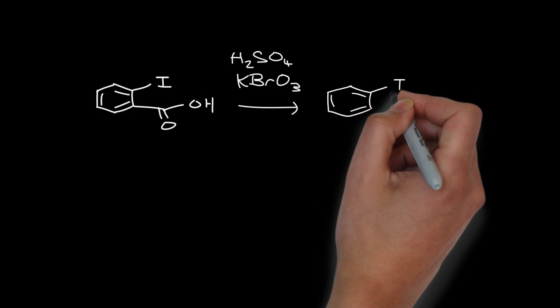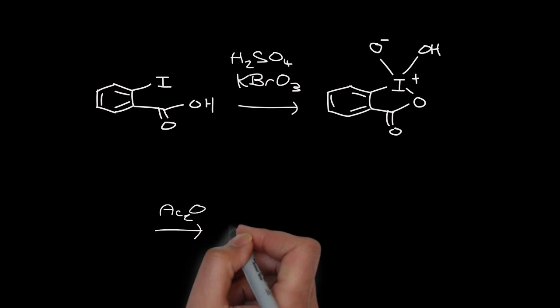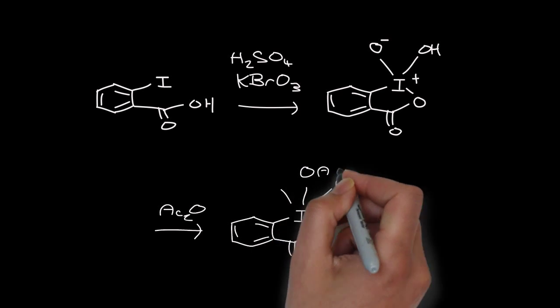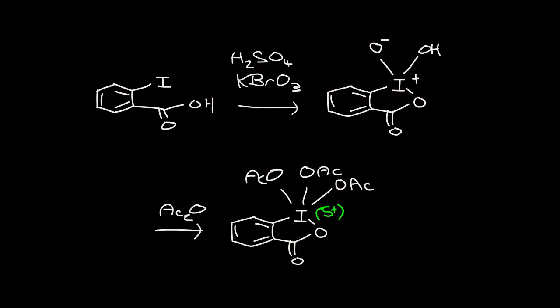Oxidation of 2-iodobenzoic acid will give an iodine 5-plus agent that's acylated on both those oxygens, generates an acetate, which adds to the iodine to give the neutral triacetate, which is the Dess-Martin reagent.